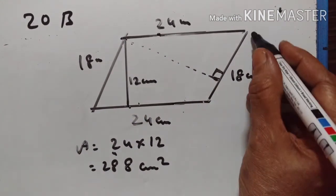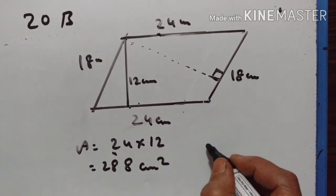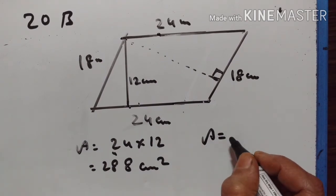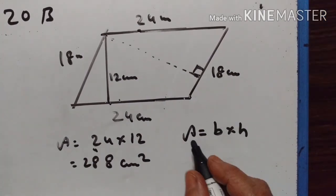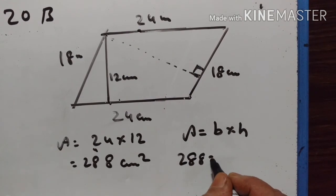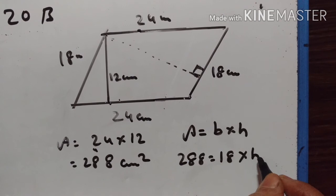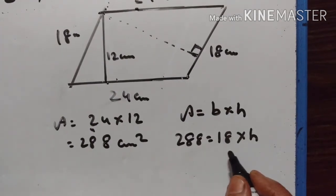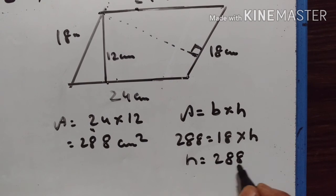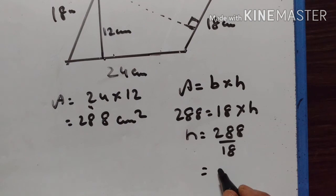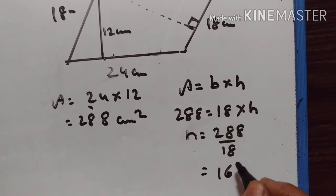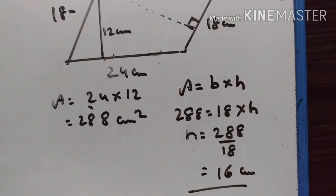Now let us take the shorter side, 18 cm, as the base. Since area remains the same, area equals base into height, so 288 equals 18 into height. Therefore 288 divided by 18 equals 16 cm. The distance between the shorter sides is 16 cm.